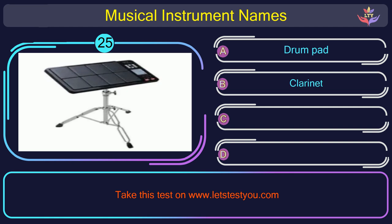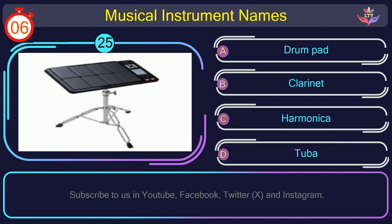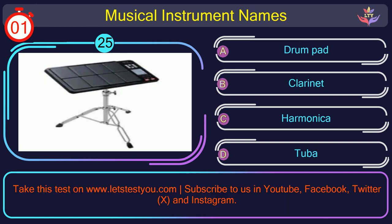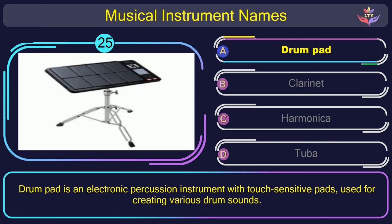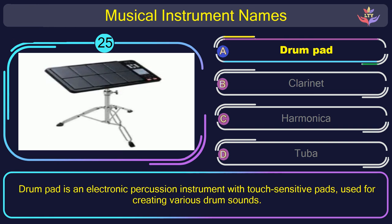Question number 25. Guess the name of the musical instrument in this picture. The correct answer is option A: Drum pad. Drum pad is an electronic percussion instrument with touch-sensitive pads, used for creating various drum sounds.